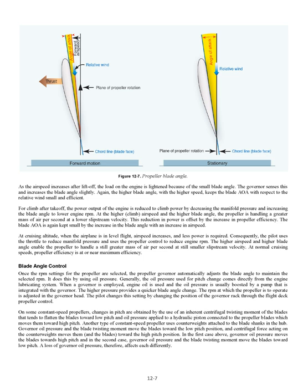At cruising altitude, when the airplane is in level flight, airspeed increases and less power is required. Consequently, the pilot uses the throttle to reduce manifold pressure and the propeller control to reduce engine RPM. The higher airspeed and higher blade angle enable the propeller to handle a still greater mass of air per second at still smaller slipstream velocity. At normal cruising speeds, propeller efficiency is at or near maximum.